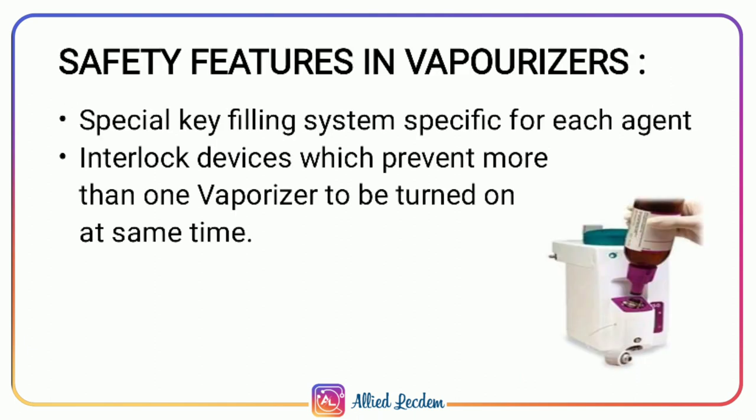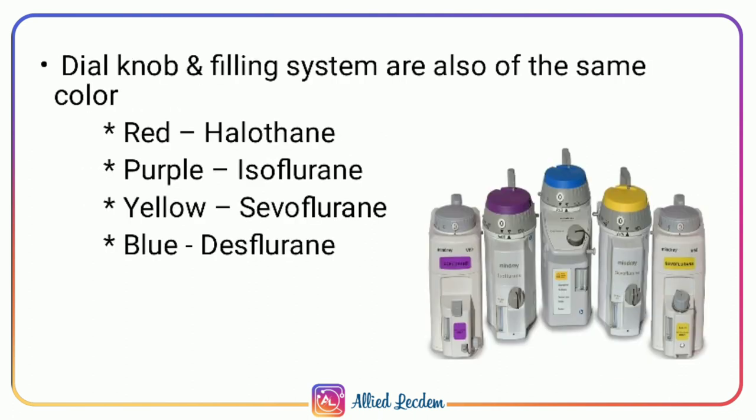Safety features in vaporizers include a special key filling system specific for each agent, and interlock devices which prevent more than one vaporizer from being turned on at the same time. The dial knob and filling systems are also color coded: red for halothane, purple for isoflurane, yellow for sevoflurane, and blue for desflurane.